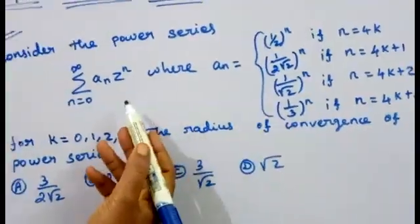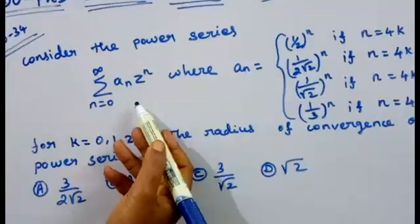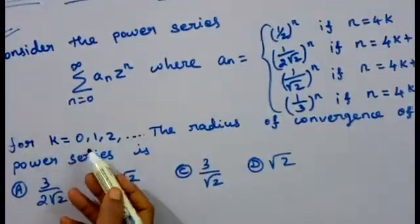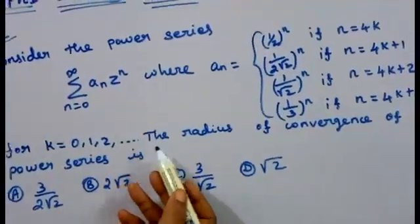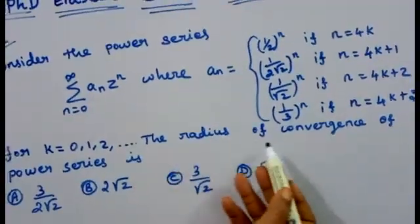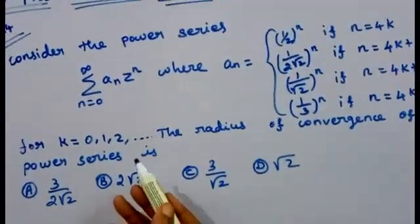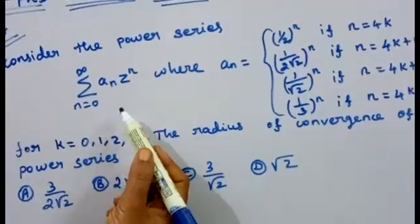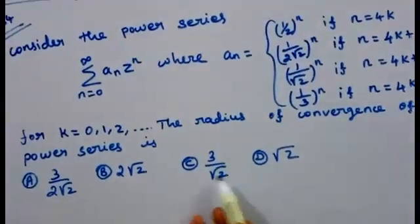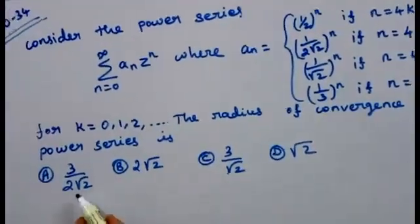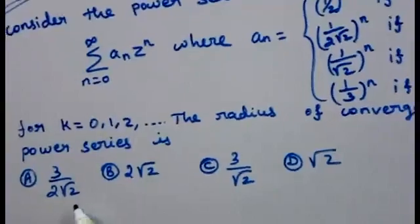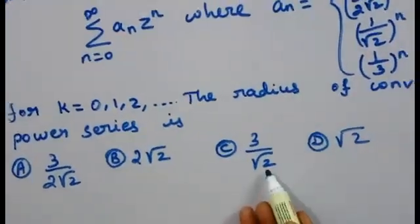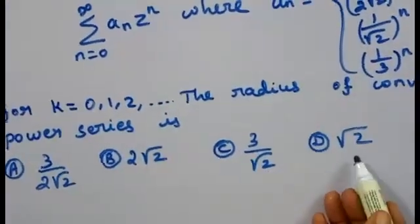We will define the power series. In the power series, we define a_n for k equal to 0, 1, 2, and so on. Then the radius of convergence of the power series has four options: first option is 3/(2√2), second one is 2√2, third one is 3/√2, and last one is √2.